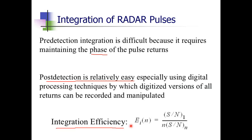Integration efficiency is defined as ei(n) = SNR of one pulse divided by (n × SNR of n pulses). The improvement in SNR when n pulses are integrated is called the integration improvement factor: I(n) = n × ei(n) = SNR of one pulse divided by SNR of n pulses. This is what we need to know before returning to transmitter power.